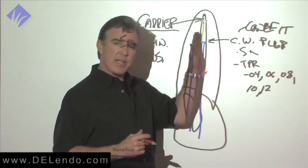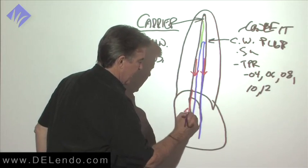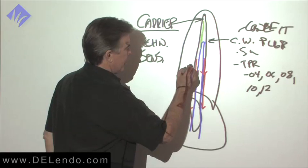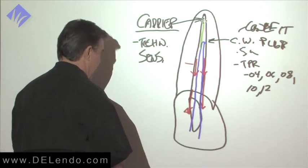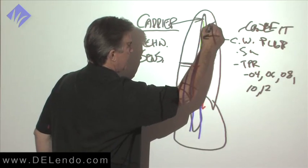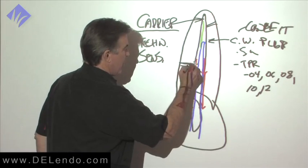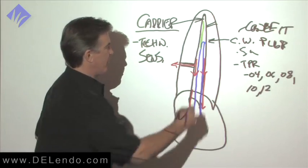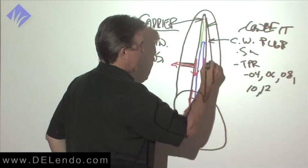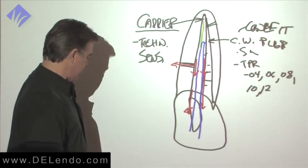So, as we drive through with the carrier or the plugger, we have the filling material streaming, and actually, it will exit. You'll see it exit the orifice, and certainly, if there's a lateral canal on the side or apically, it doesn't matter, it's going to continuously stream into that lateral canal. If you have two canals here, and there's an isthmus between them, it'll be moving into those areas very simply.